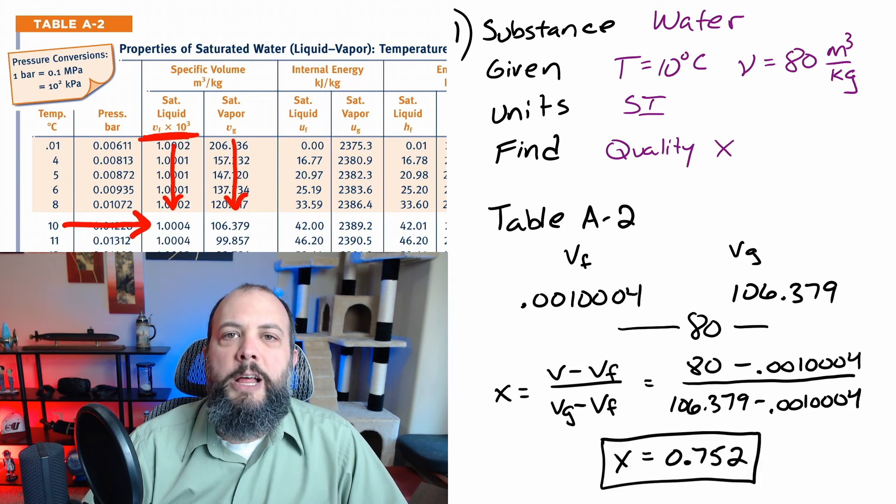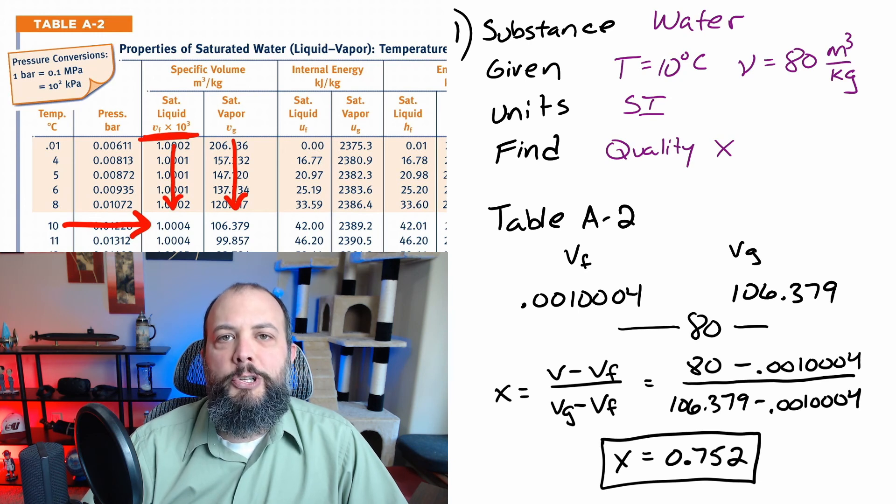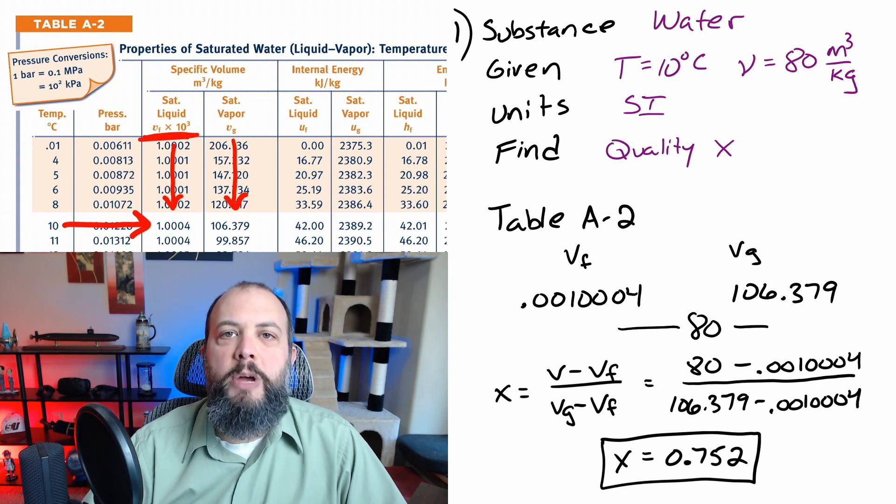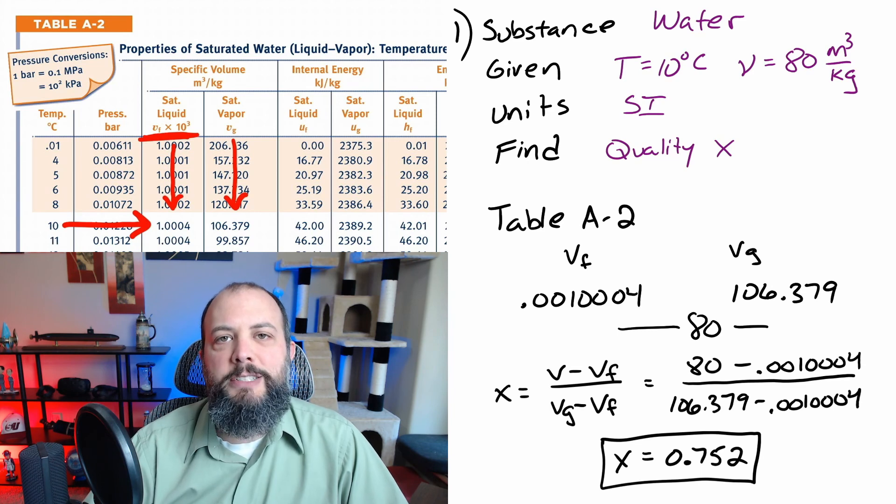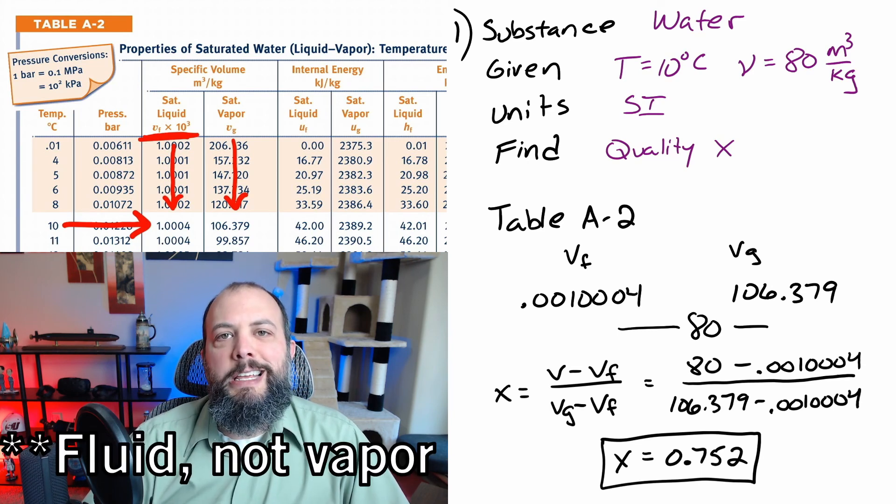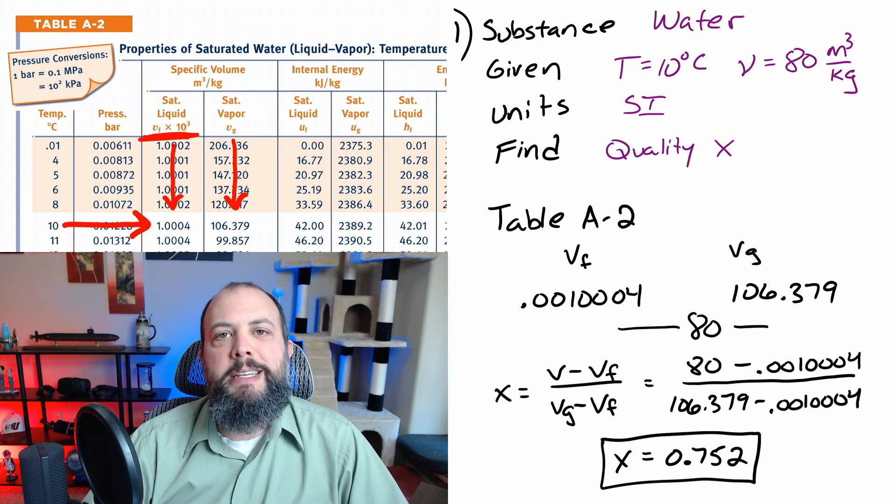And in this case we get a value of 0.752 and to check the answer we'll look and see if this actually makes sense. Since 0.752 is higher than halfway right it's three quarters of the way then our specific volume should be closer to the saturated gas value than the saturated vapor. And since our value of 80 is closer to 106 than it is to 0.001 a value of 0.75 makes sense.